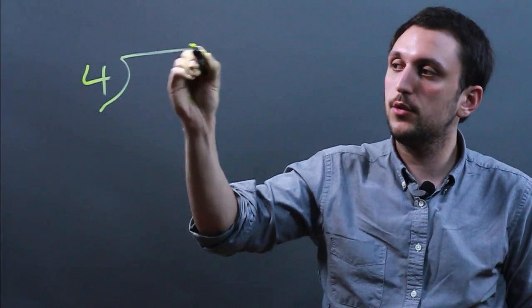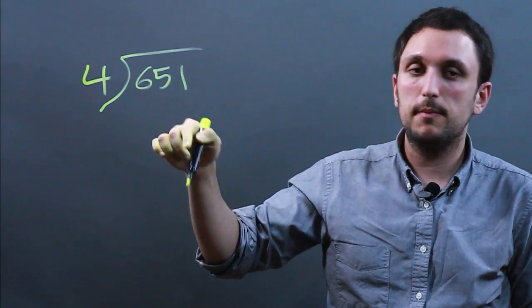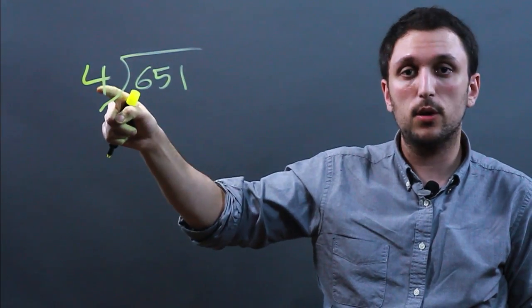So let's take the number 4 and let's say we want to divide 4 into 651, meaning 651 divided by 4.